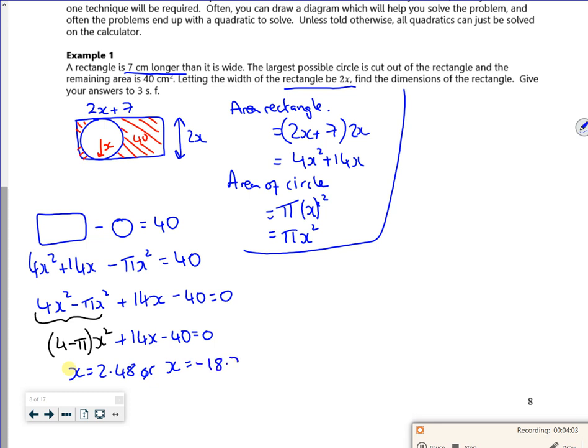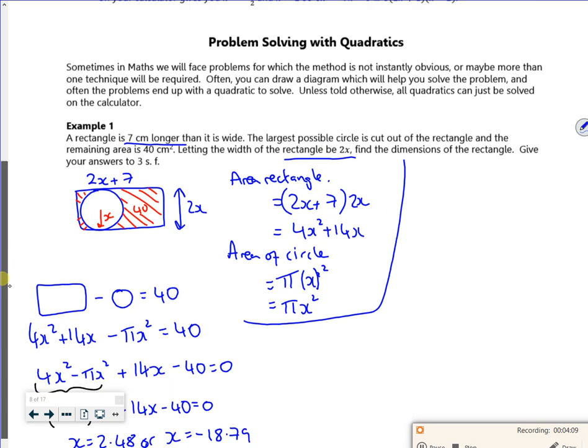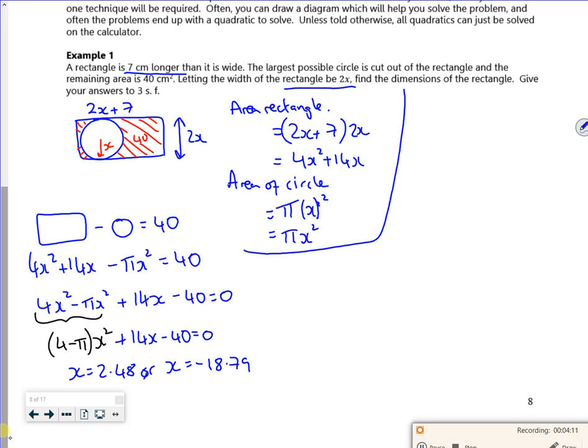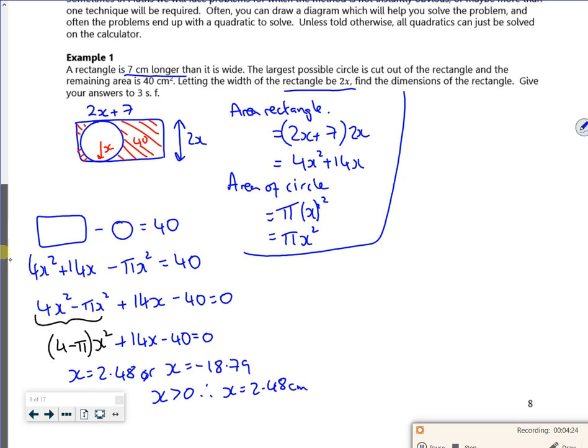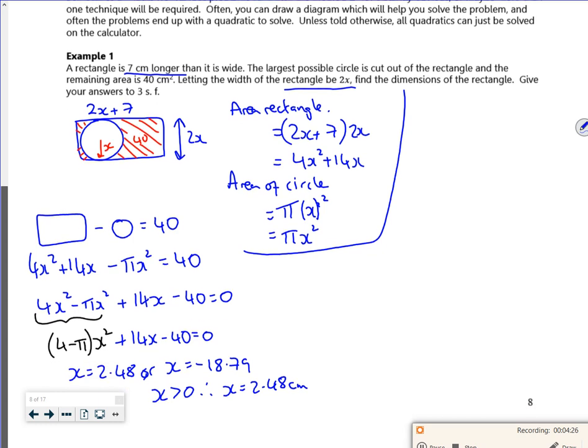So we know for it to be like a physical dimension, we know that x has to be greater than zero. Therefore, x must be 2.48. Now is this in meters or what? Centimeters. So it says find the dimensions of the rectangle.